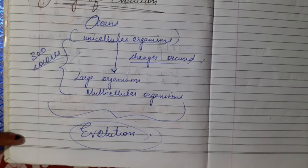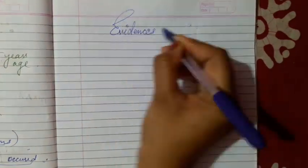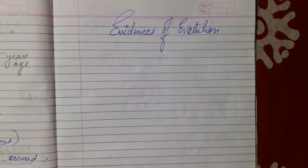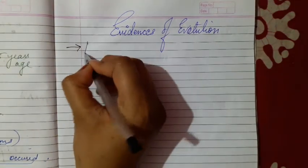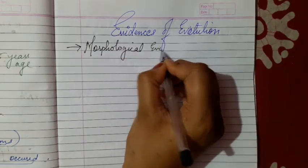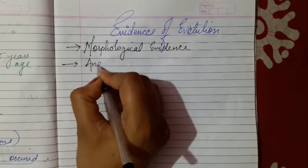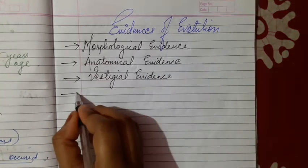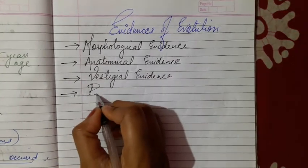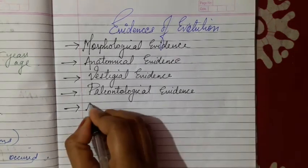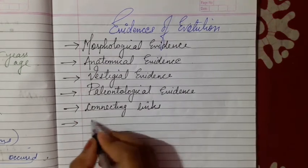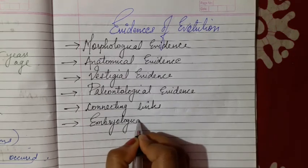Now let us see the evidence of evolution. There are basically six evidences which were found: the first one is morphological evidence, the second is anatomical evidence, the third is vestigial evidence, the fourth is paleontological evidence, the fifth is connecting links, and the last one is embryological evidence.